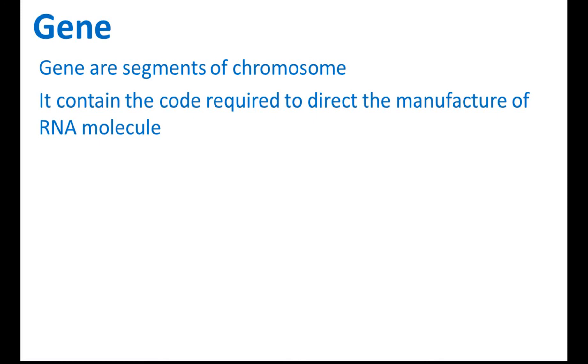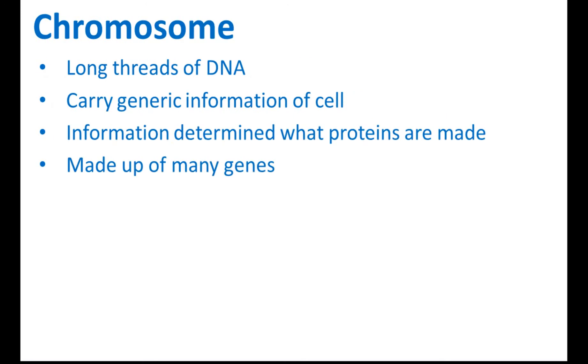During cell divisions, this gene will give information, will pass this information to our bodies so that our bodies can manufacture the RNA molecule according to certain characteristics. So this is a function of the gene, that it stores the information of the characteristics of an organism.